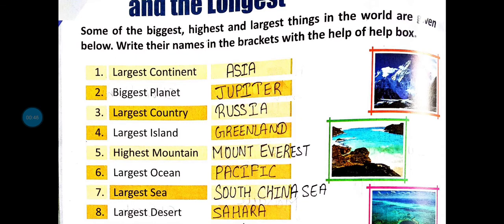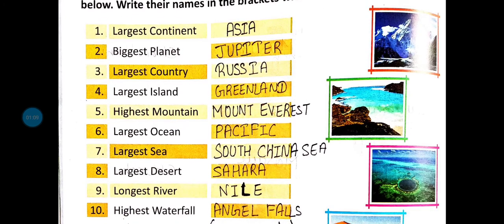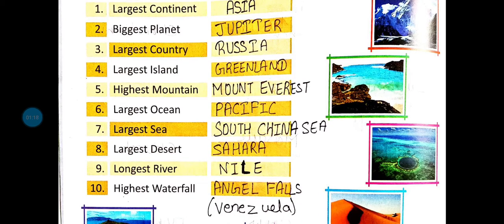First one: largest continent — the answer is Asia, A-S-I-A. Asia is where our India is. Second: biggest planet — the answer is Jupiter, J-U-P-I-T-E-R. Third: largest country — the answer is Russia. Fourth: largest island — the answer is Greenland, G-R-double-E-N-L-A-N-D. Fifth: highest mountain — the answer is Mount Everest, M-O-U-N-T E-V-E-R-E-S-T.